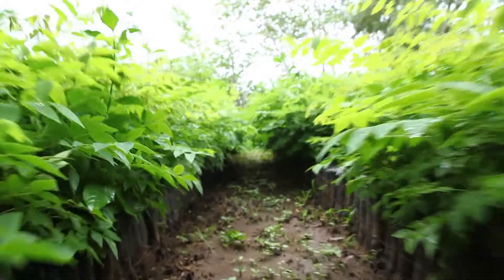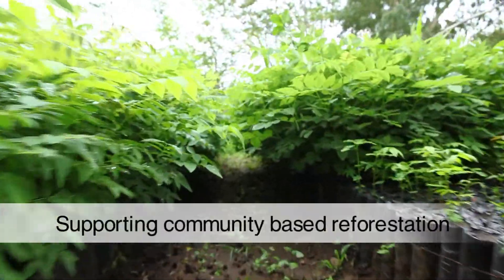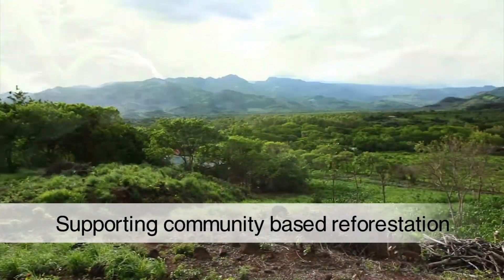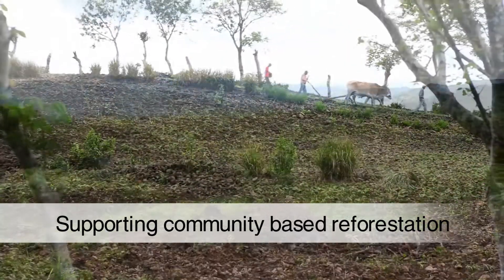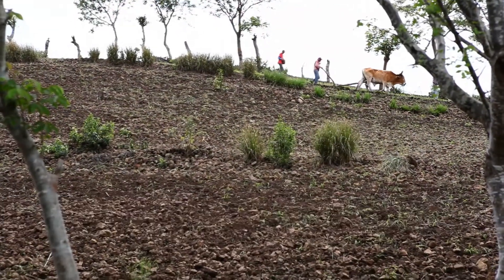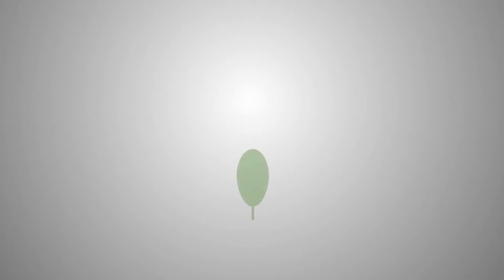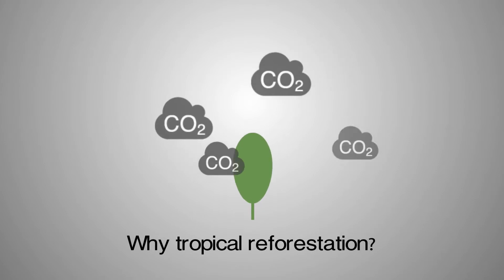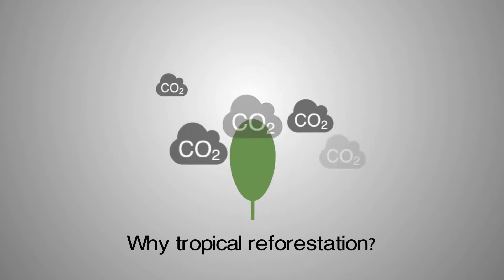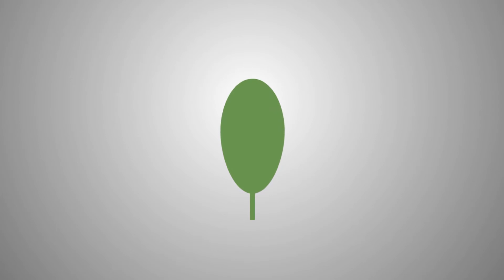This involves reducing our carbon footprint and supporting worldwide climate projects that help absorb carbon emissions and tackle poverty, such as community-based reforestation. Wood is made up of 50% carbon, so when trees grow, they absorb carbon dioxide from the air and store it in their plant tissue.